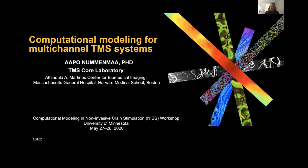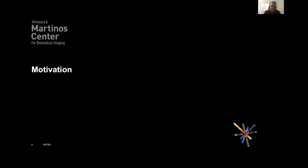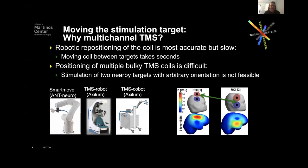Before going into the detailed material, I'll give a couple of slides of motivation — why are we doing this to begin with? If you think about moving the stimulation target within the context of TMS and why we need multi-channel TMS, there are really exciting robotic TMS arms that can be used for positioning, and you could argue this is the most accurate method.